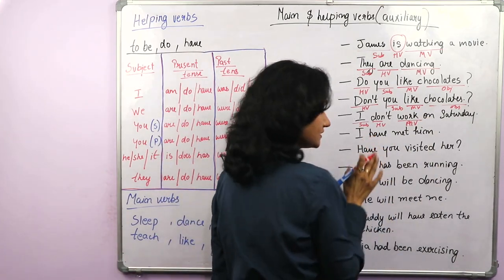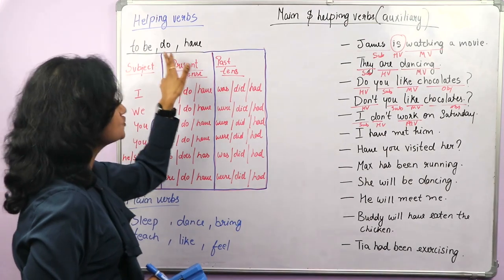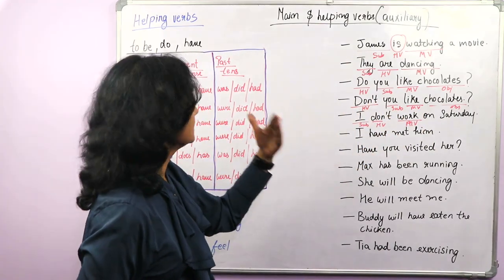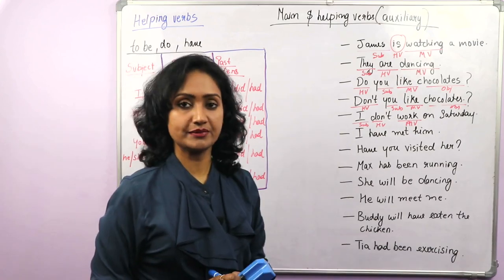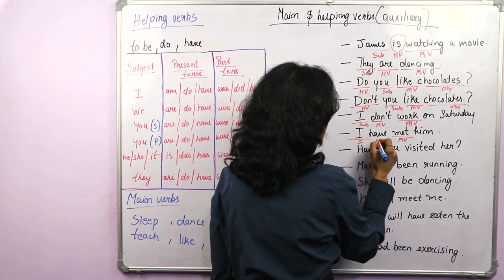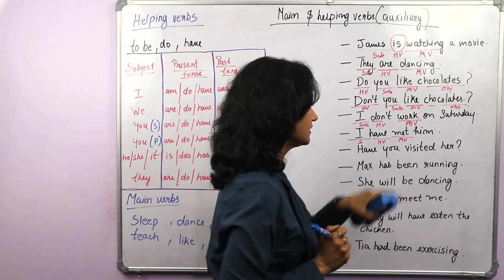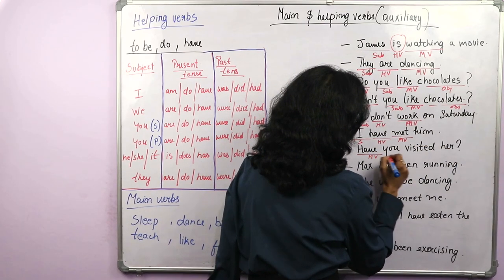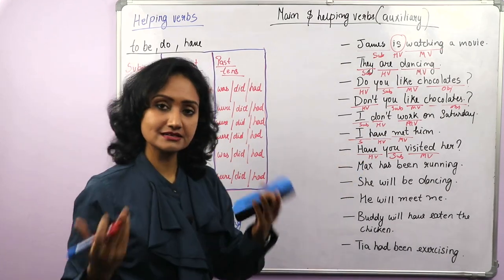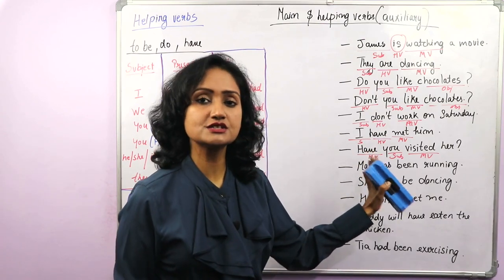Now let's see how we use have as a helping verb. 'I have met him.' The main verb is met, I is the subject, and have is the helping verb. Next, interrogative: 'Have you visited her?' Have is the helping verb, you is the subject, visited is the main verb. In perfect forms or perfect continuous, we use have — has been, have been, had been — these all are helping verbs.